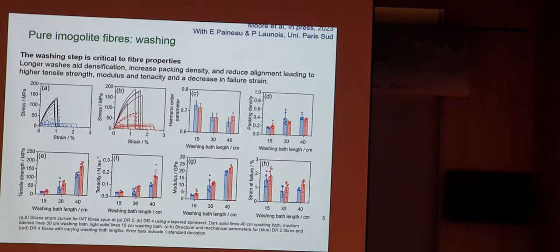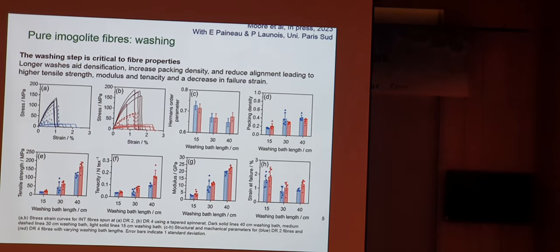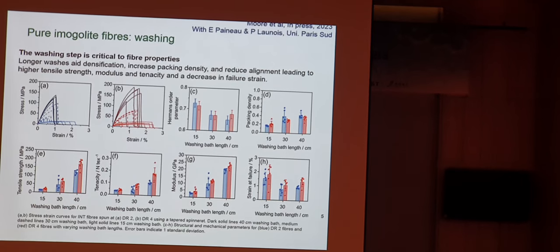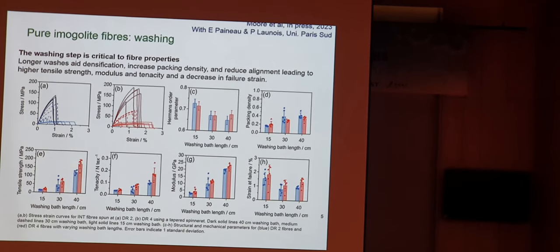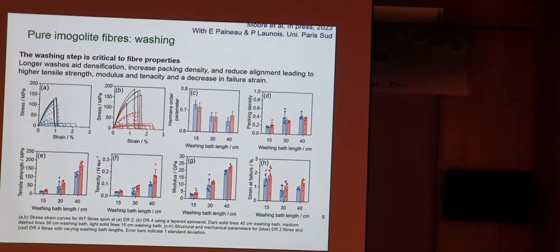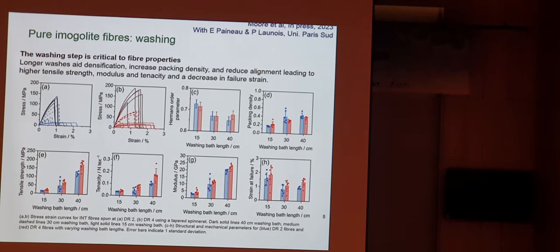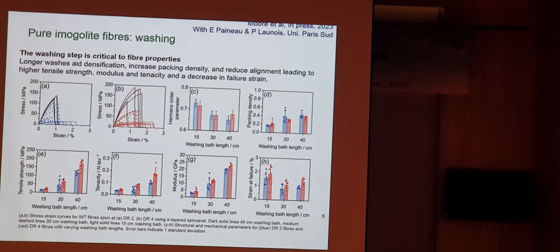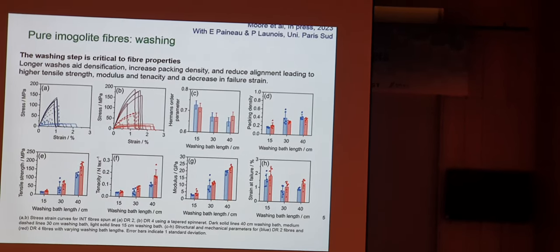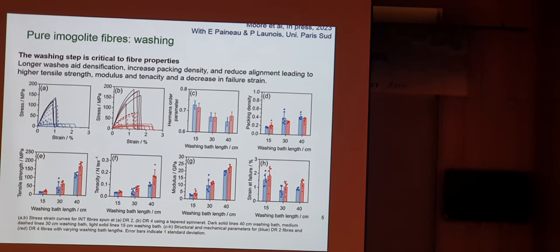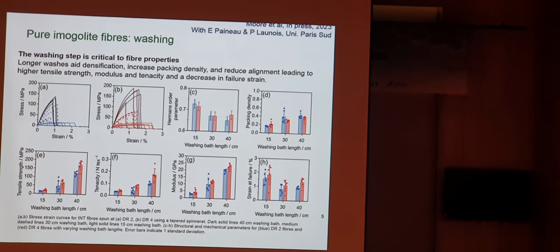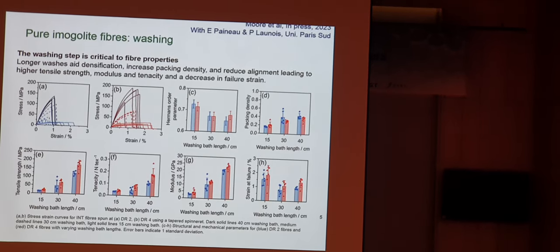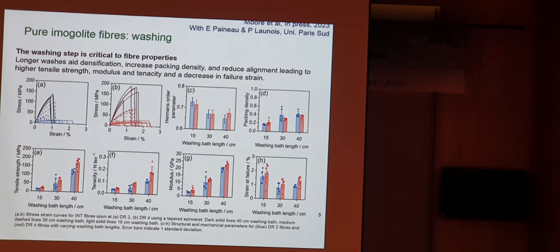In these fibers, getting the washing rate is quite important for optimizing the performance. Here you see that as you have a longer washing time, you get a denser fiber, you get a higher packing density, but slightly perversely a slightly lower alignment due to the relaxation of the fibers of the imogolite. Nevertheless, you get an increasing tensile strength and an increasing tenacity, increasing modulus, and so on as you do that.